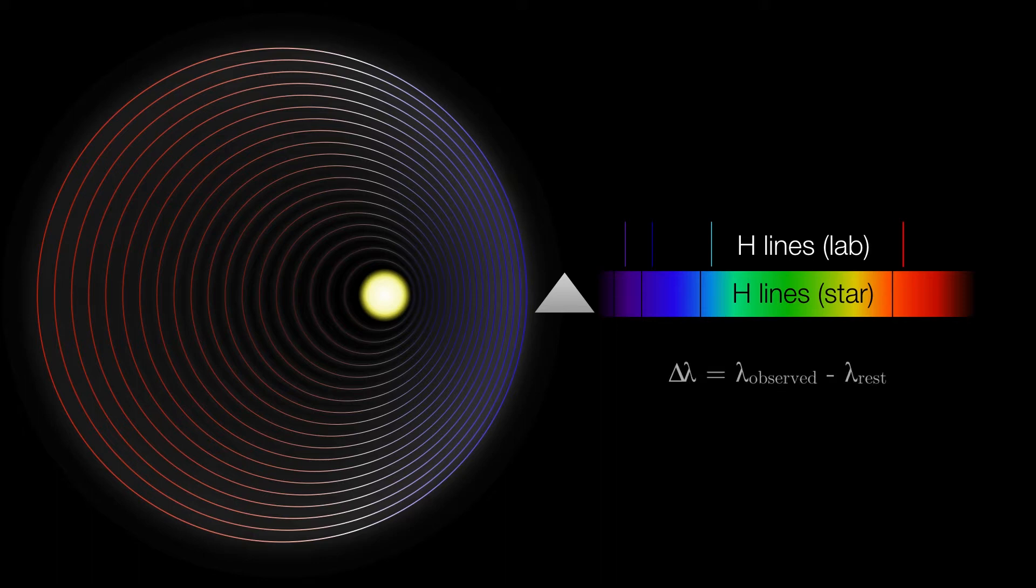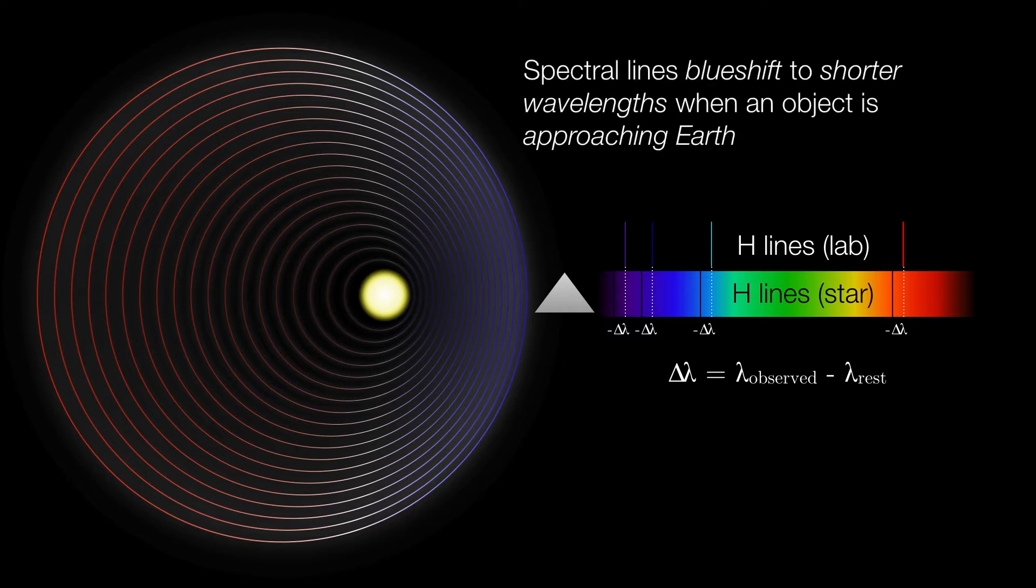So the change in wavelength is simply the observed wavelength minus the known rest wavelength. In this case, we are subtracting a larger value from a smaller value, so we're going to end up with a negative value of the Doppler shift. Therefore, a Doppler shift is blue shifted to shorter wavelengths when the object is approaching Earth, and therefore its Doppler shift itself is always going to be negative. It's going to be less than zero.